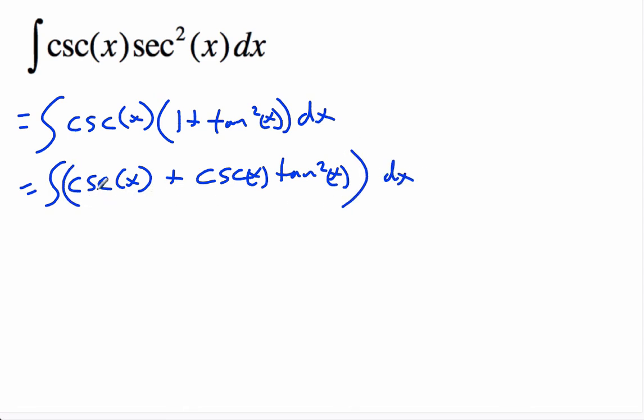Okay, so the integral of cosecant x I handled in a previous video. That's simply negative ln absolute value of cosecant x plus cot x.